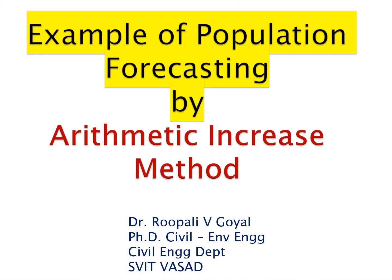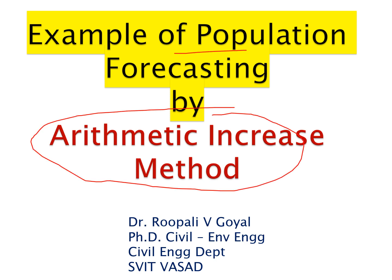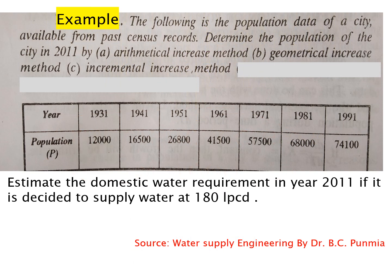Hello everyone. Aaj hum ek solved example karenge based on population forecasting by arithmetical increase method. Here, population data diya hua hai according to past census records, and we have to determine the population of a city in 2011 by arithmetic increase method, geometrical increase, and incremental increase. So today we will discuss only about the arithmetical increase method.